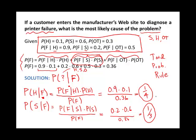Now we know P(H|F) = 1/4 and P(S|F) = 1/3. I don't need to calculate the third because I know those three must add up to one — they're mutually exclusive. Given I had a failure, it's going to occur in one of those three ways. Adding the first two together gives 7/12, so the probability of other given failure is 5/12.